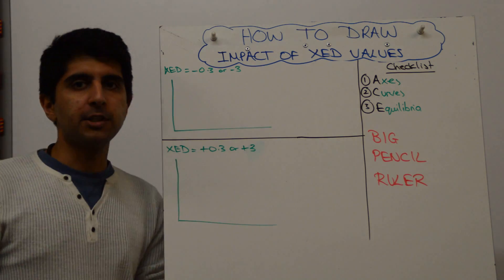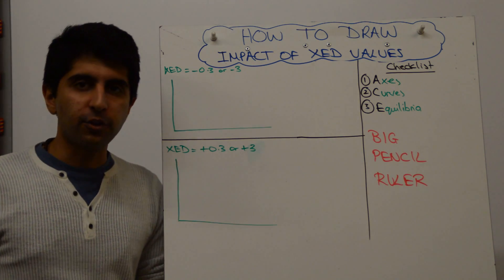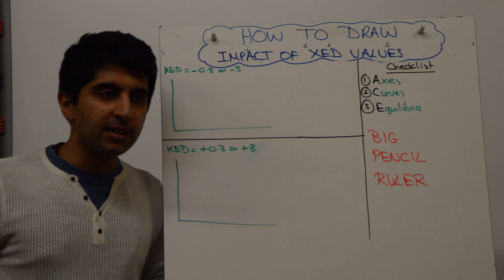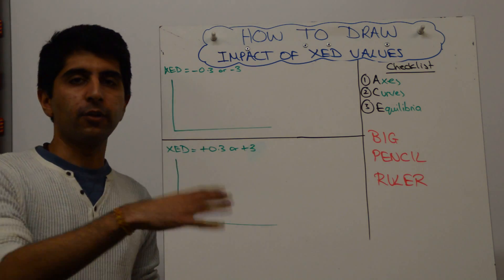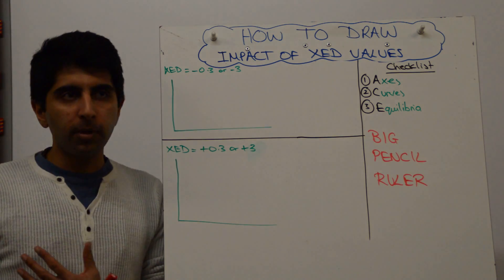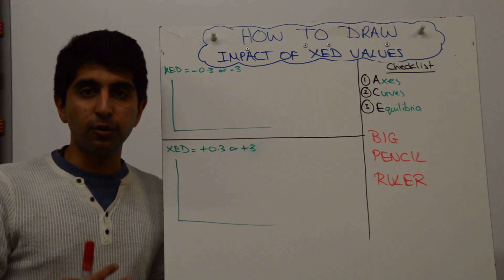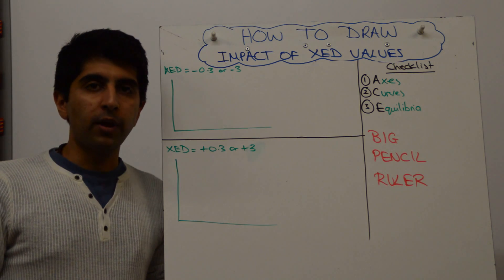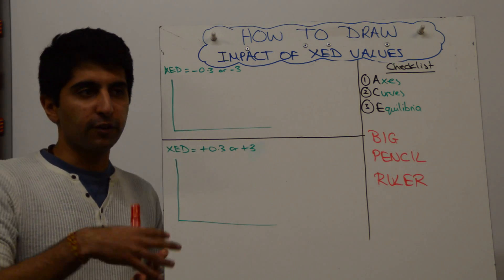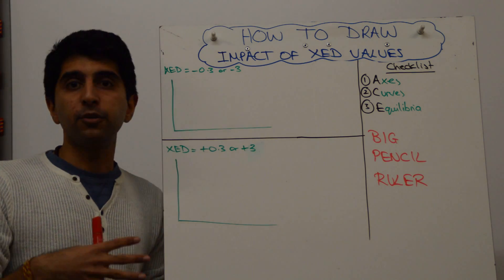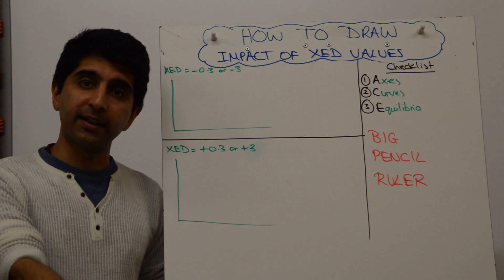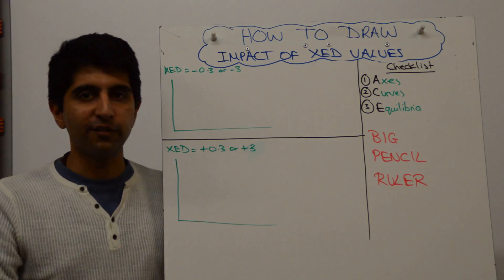So XED is all about the relationship between complements and substitutes and basically how much demand will react if the price of a complement goes up or down or the price of a substitute goes up and down. So when the price of a complement changes or a price of a substitute changes, what you need to draw is a shift of demand either left or right, depending on whether it's a complement going up or down in price or a substitute going up or down in price. But what XED will tell you is how much to shift that demand curve and that's what this video is going to focus on.